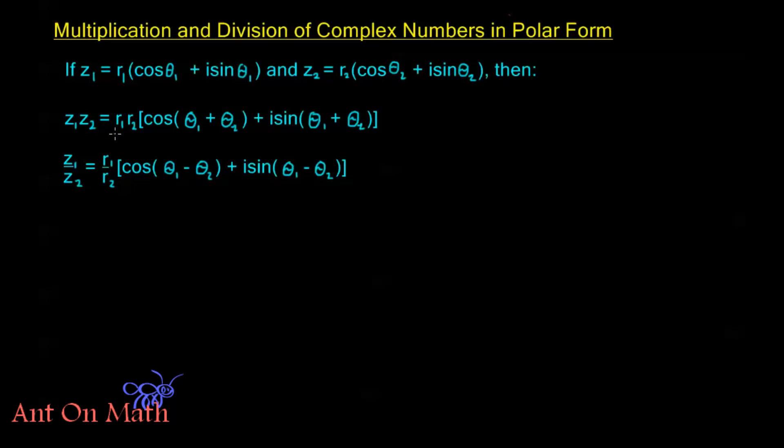Z₁ times Z₂ equals r₁r₂ times the quantity (cos(θ₁ + θ₂) + i sin(θ₁ + θ₂)). This is the polar form of the product. For division, Z₁ over Z₂ equals r₁/r₂ multiplied by (cos(θ₁ - θ₂) + i sin(θ₁ - θ₂)).